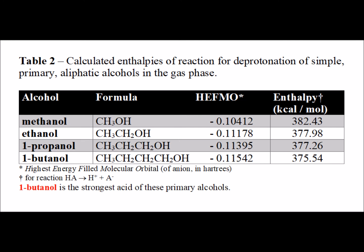Comparing these four alcohols, we notice that the enthalpies of reaction to lose a proton are very close, but we see a general trend: the enthalpy of reaction is the largest for methanol and smallest for 1-butanol. This tells us that 1-butanol is the strongest of the acids shown and methanol is the weakest. Following the energy of the lone pair — the HOMO, in units of Hartrees — the lower the energy of this orbital on oxygen, the weaker the base, and therefore the stronger the conjugate acid. This again confirms that 1-butanol in the gas phase is the strongest acid and methanol is the weakest in the gas phase.